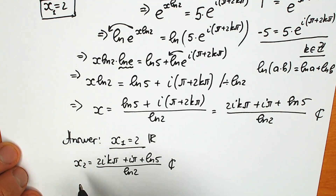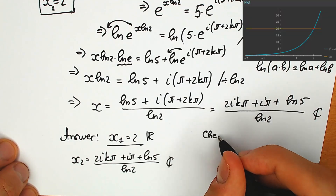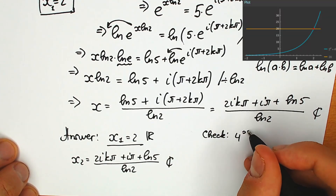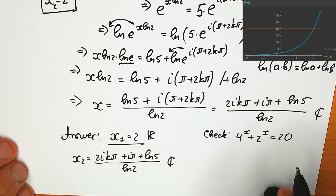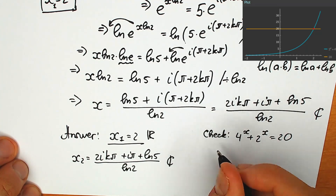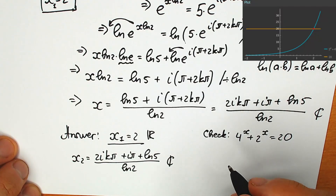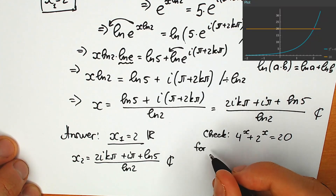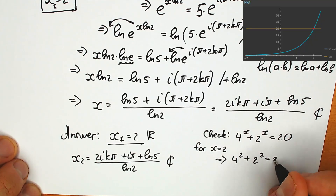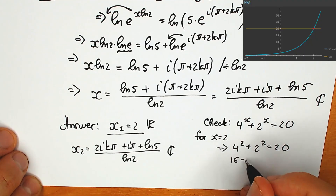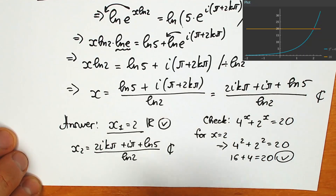One real number root and one complex root. Let's quickly check x₁ equals 2. We have 4 to the x plus 2 to the x equals 20. A lot of students might think they can solve this by inspection — and that's true, you can check x equals 1, x equals 2. But in terms of math, we need a proper solution. Plugging in: 4 squared plus 2 squared equals 16 plus 4, which equals 20. Our root is absolutely correct.